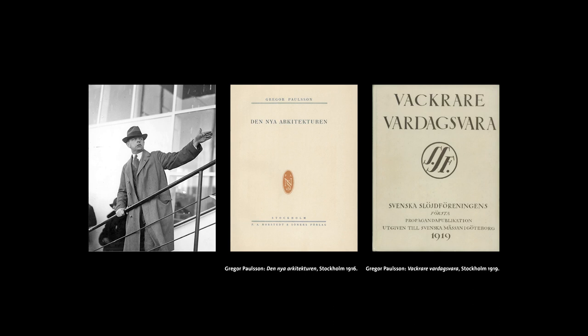For instance, in his 1910 lecture 'Anarchy, the Style of the Time,' he calls for a new style based on contemporary circumstances, a cooperation between engineers and artists, as well as industrial production. In his 1920 book 'The New Architecture,' he expands these ideas to include rationalization. And in his 1919 book 'Better Things for Everyday Life' (Vackrare Vardagsvara), he outlines a comprehensive program for the reform of arts and crafts in Sweden, weaving all of these things together to present a program for reforming not only architecture but arts and crafts in order to create a new modern future society.